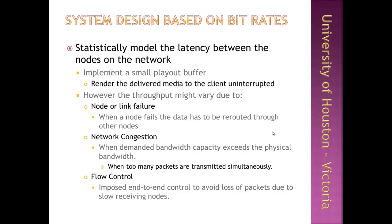Flow control is another issue that can arise during end-to-end delivery, preventing data loss at the receiving end due to slow receiving nodes. If the sender transmits data much quicker than the receiver can buffer and consume it, buffer overflows occur and cause data loss. For example, on a 1 gigabit per second network, if a fast computer sends at 200 megabits per second but a slower computer can only receive at 10 megabits per second, packets are not picked up in time and data is lost. Flow control protocols must be established to control effective data flow.